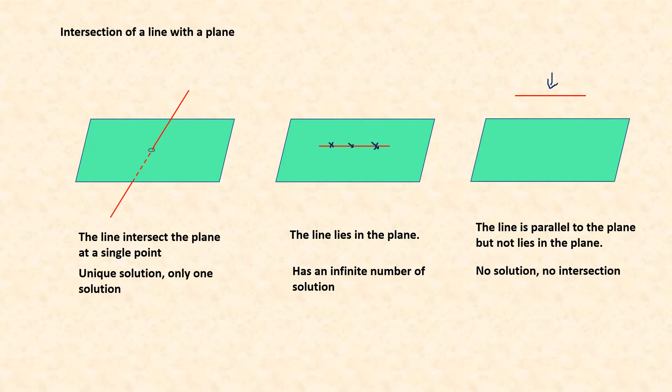Sound familiar? Unique solution, infinite number of solutions, and no solution. Have you seen this before in matrices?